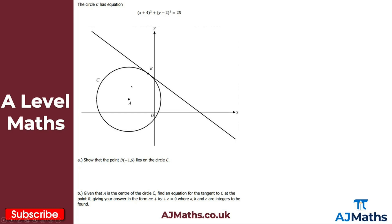Referring back to GCSE maths and circle theorems: if we have the center at point A and it touches a point on the circumference at point B which is a tangent to the circle, then the line from the center to the circumference forms a radius. Where this radius meets the tangent, they are perpendicular — they meet at a right angle.